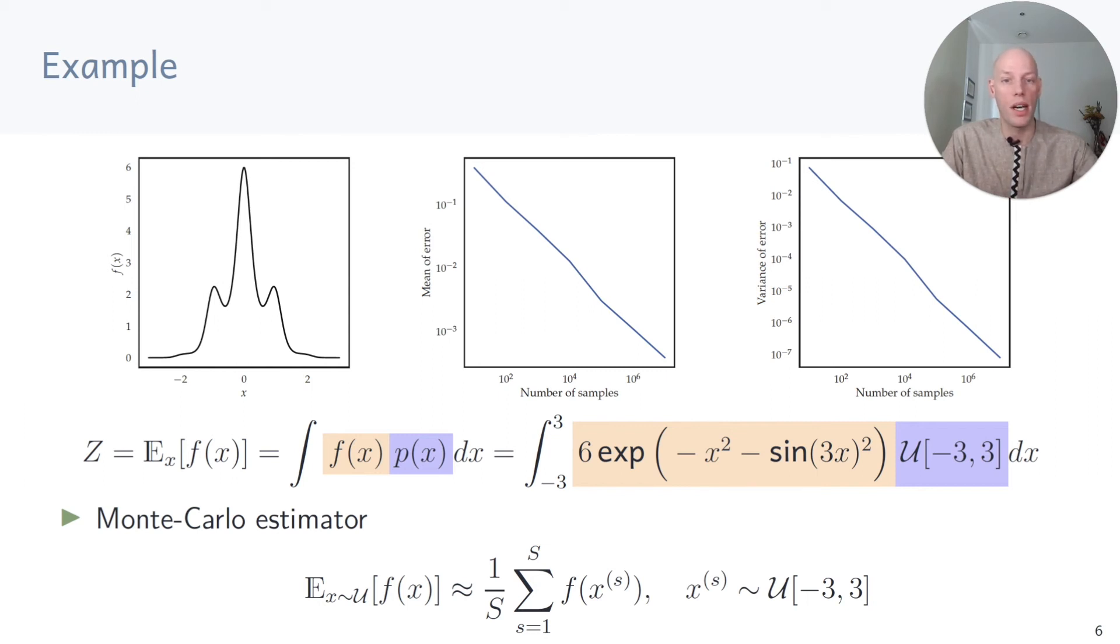whereas the Monte Carlo estimator for this function needs about 100,000 samples. So this is the level 10 to the minus 3 here, so that's about 10 to the 5, 10 to the 6 many samples we need to get to this accuracy.